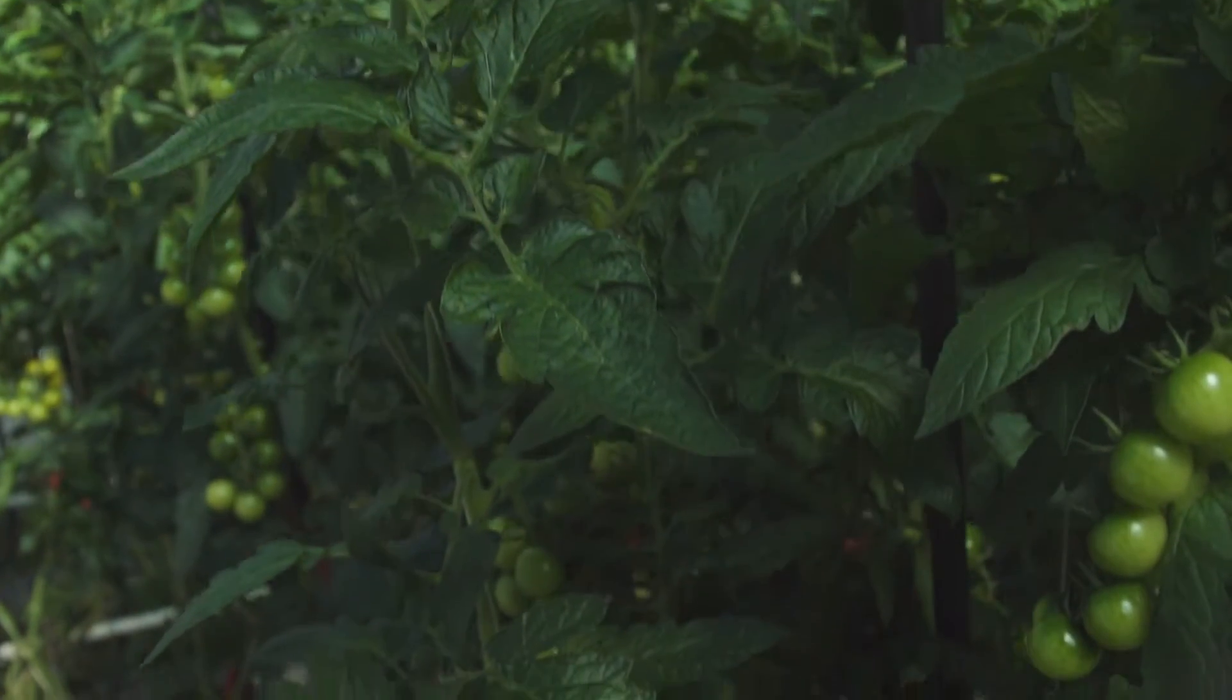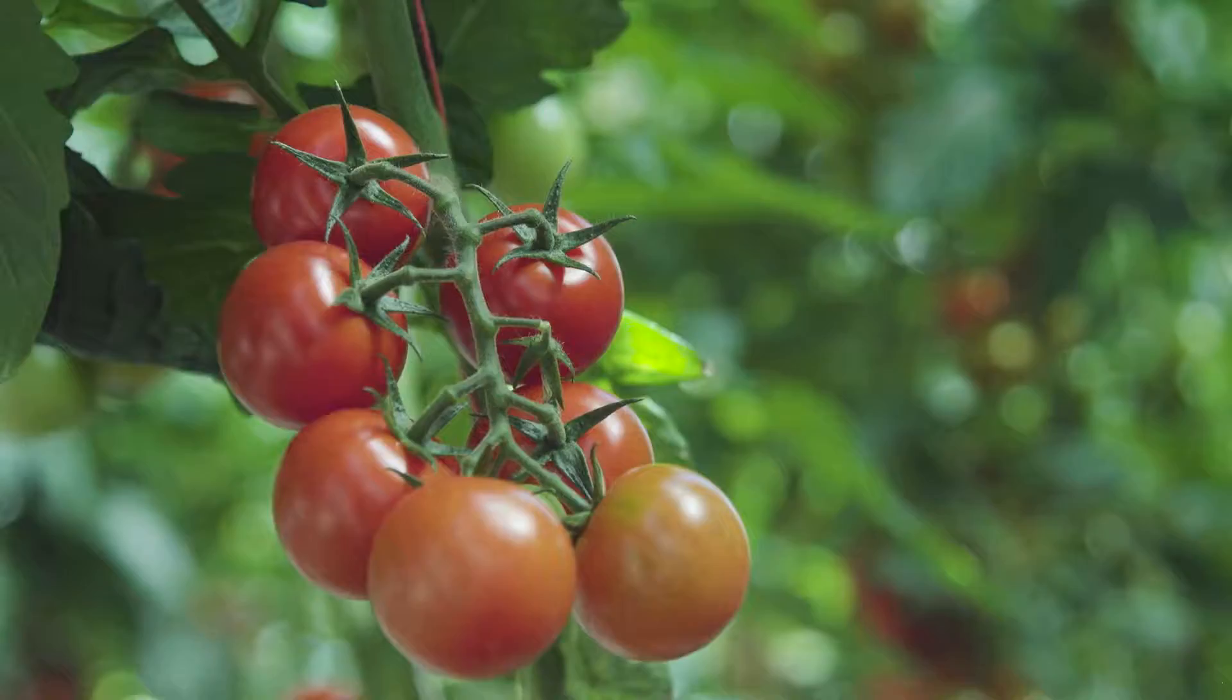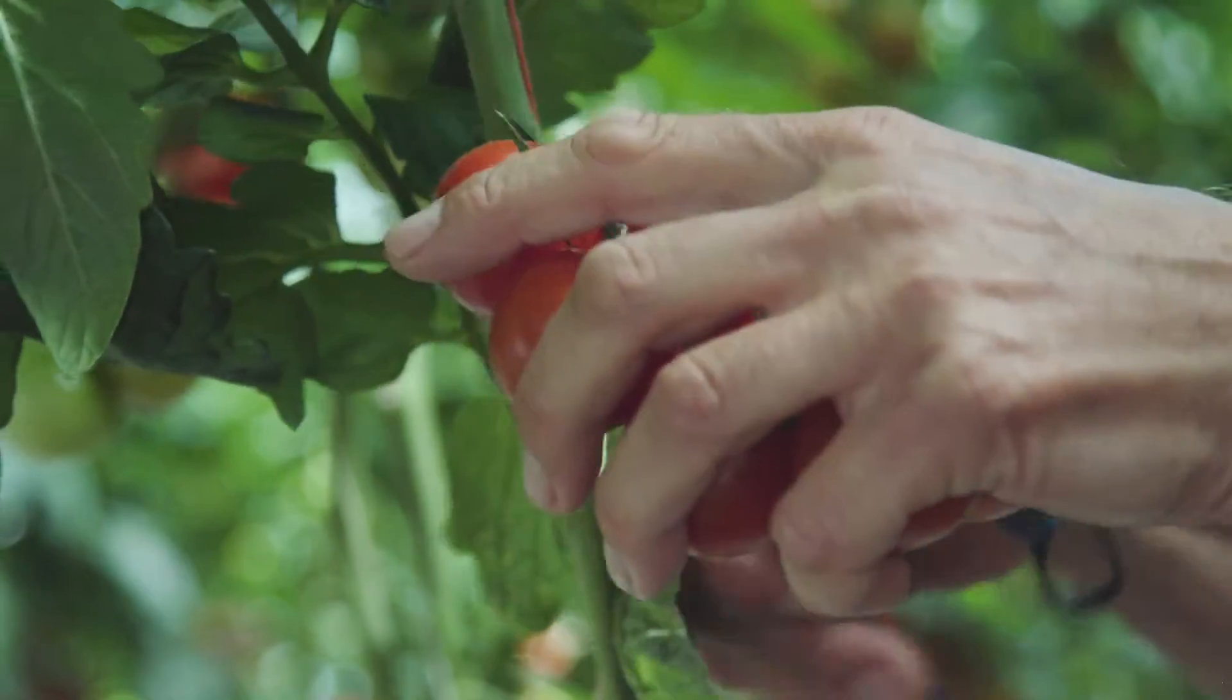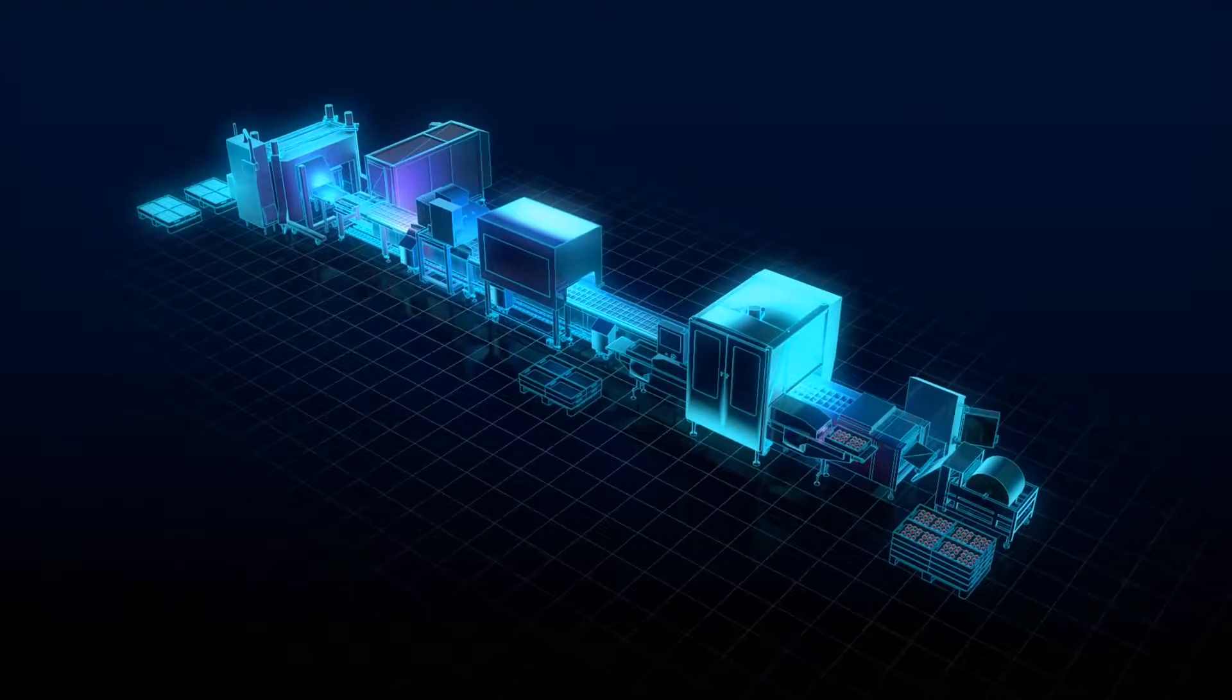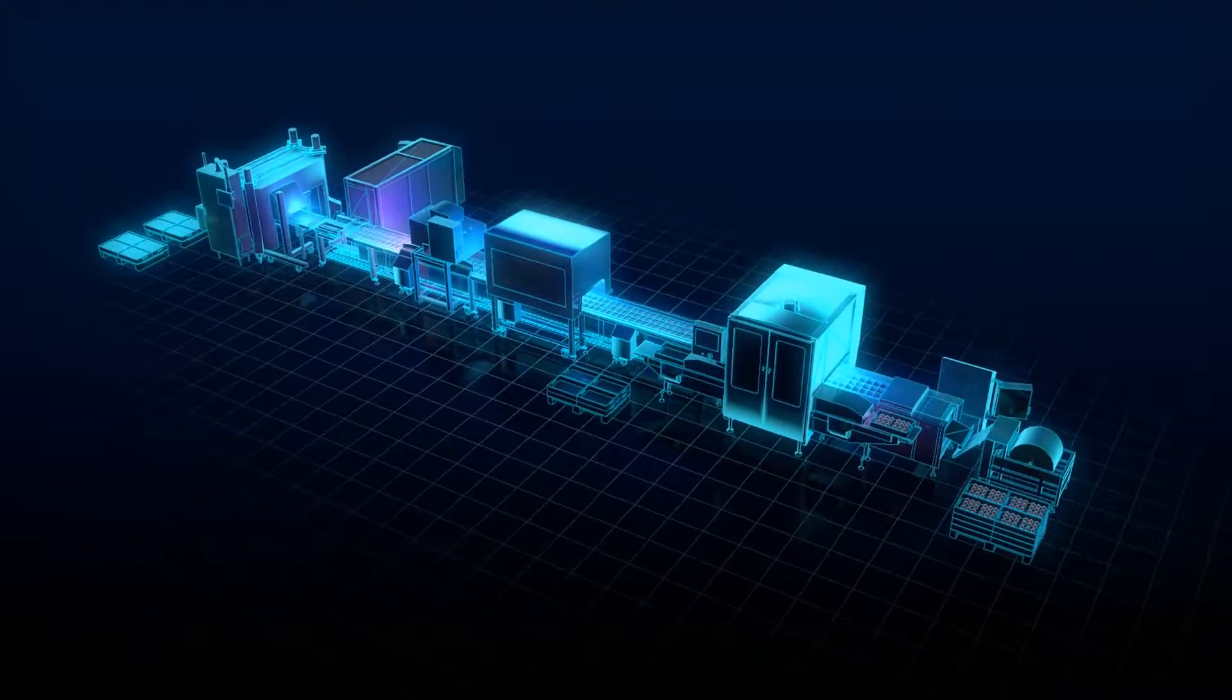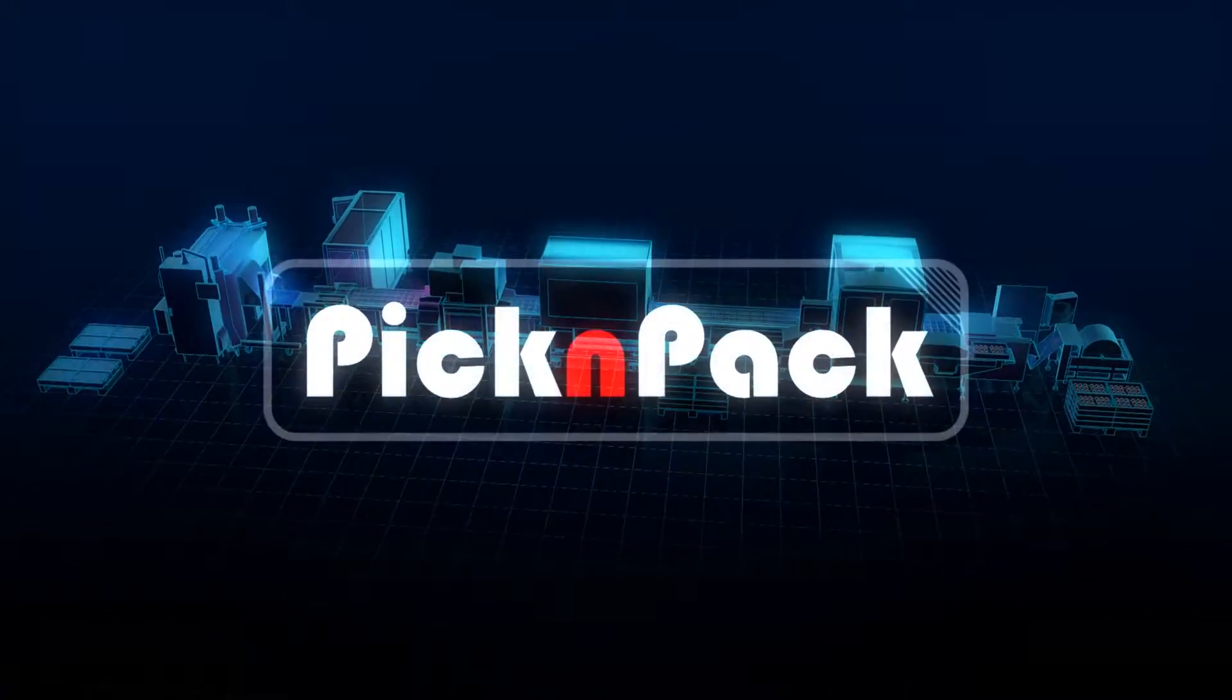At the end of 2011, 14 partners came up with a master plan that would revolutionize picking and packing operations in the food industry. A plan that would make it possible for different food products to be processed on the same production line. This master plan was given a name: Pick and Pack.